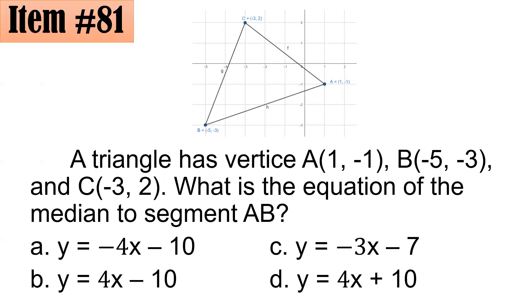For item number 81, a triangle has vertices at A(1, -1), B(-5, -3), and C(-3, 2). What is the equation of the median to segment AB? Is it A, B, C, or D?